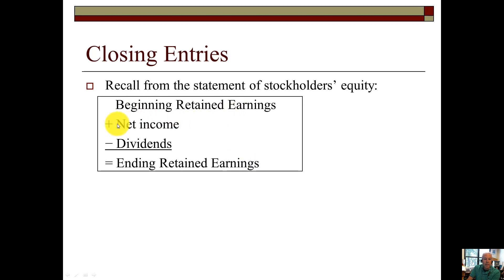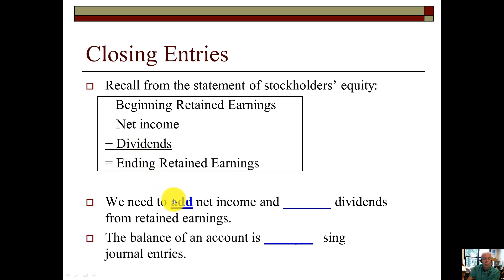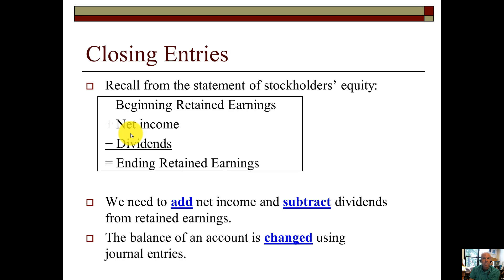We start with the beginning retained earnings, add our net income, subtract our dividends, and we get our ending balance. Therefore, we need to add net income and subtract dividends — look at the signs in the reconciliation for retained earnings. The balance of an account is changed using journal entries, so this is where we physically write the journal entries to update the account balances. It's not a magical process — an accountant doesn't wave a magic wand. It has to be done by a physical journal entry recorded in the accounting systems so that the account balances get updated.